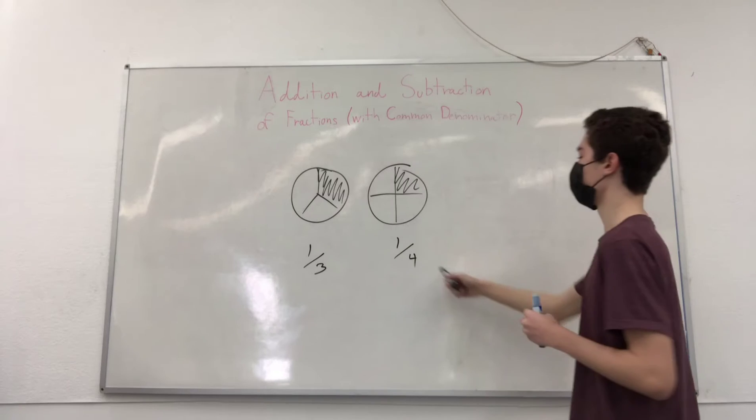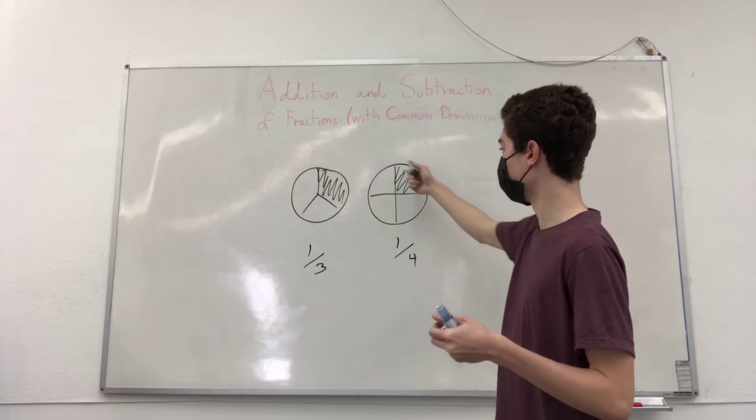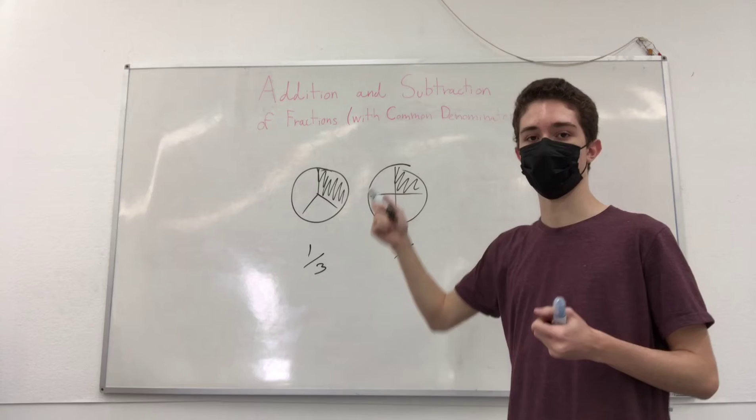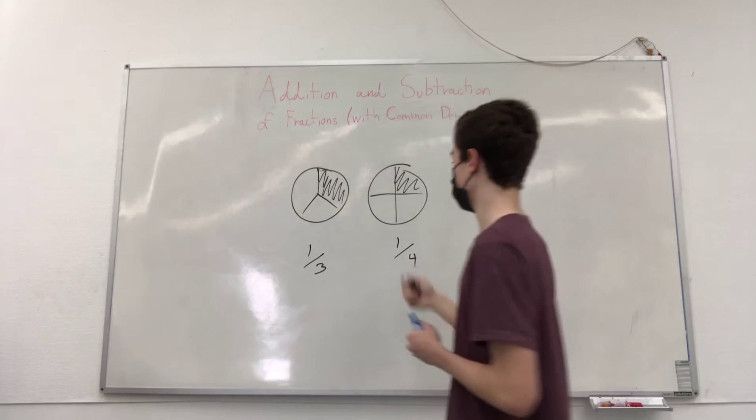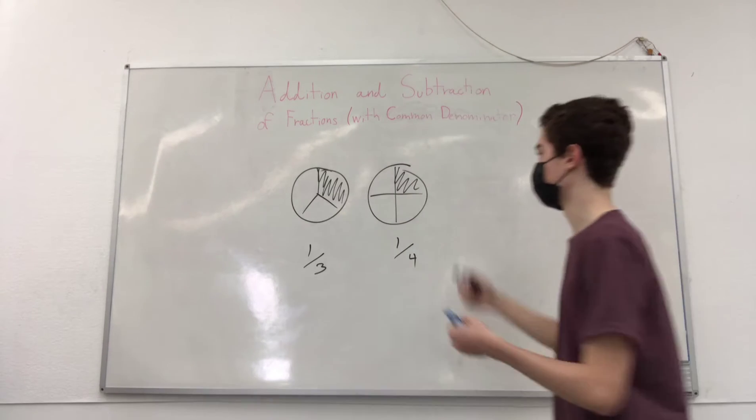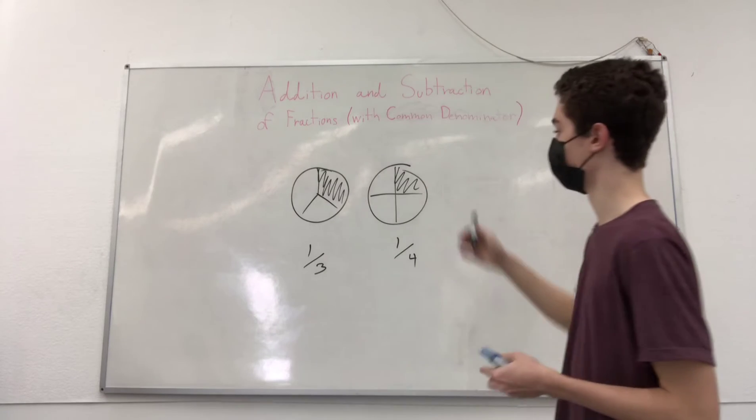The bottom number always refers to how many parts this whole is split into, the pizza is split into, and the top is how many parts you have. So in this case you have one of the four parts, so it's one fourth.